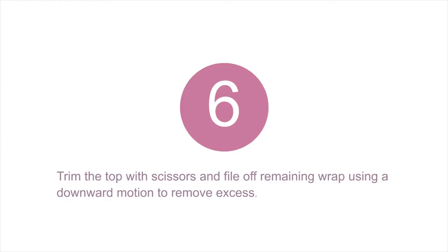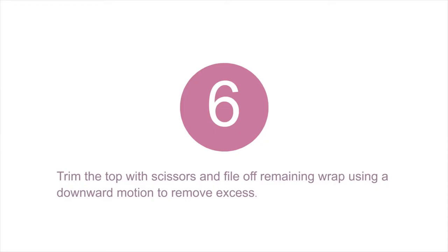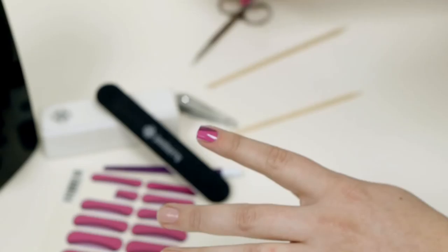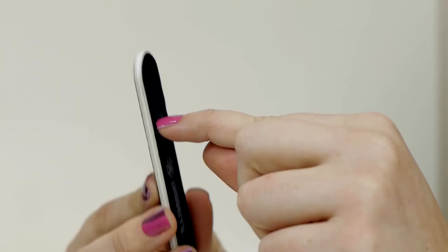With your nail scissors, trim the excess wrap from the top of your nails. Then using a file, gently file off any remaining nail wrap using a downward motion at a 90 degree angle to your nail. Aggressive filing is not needed.